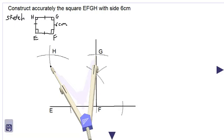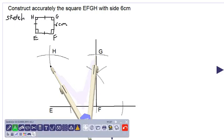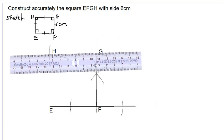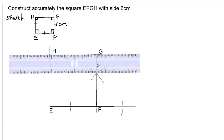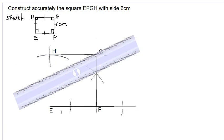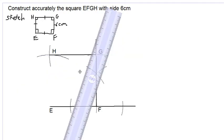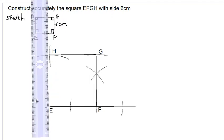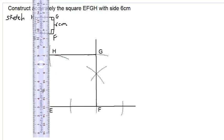We now use our long ruler and connect points G to H, and then we connect points H and E in a straight line.